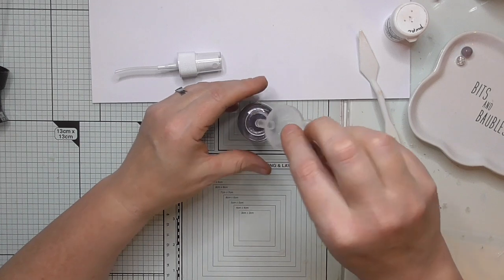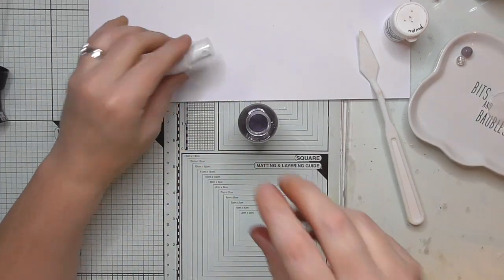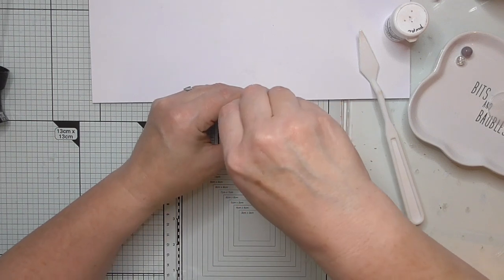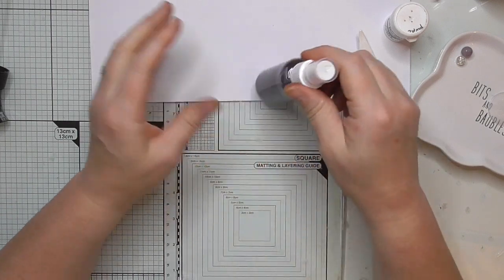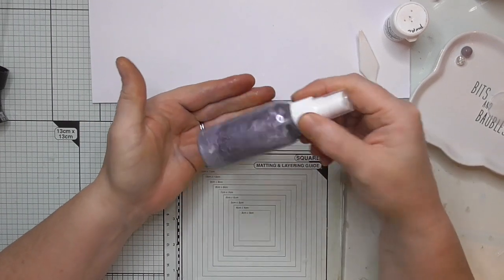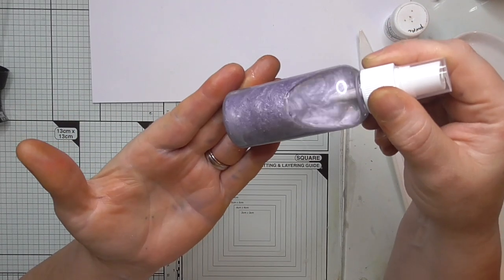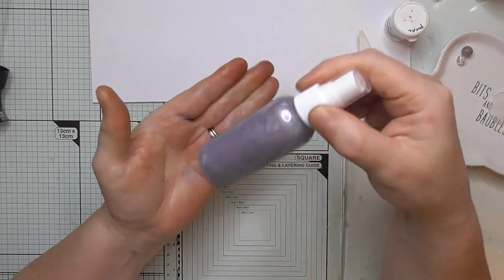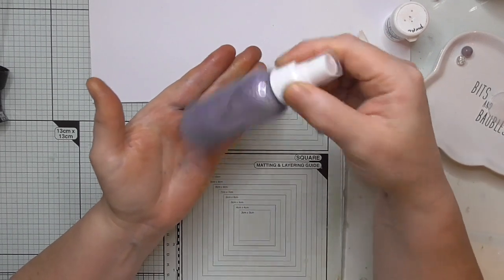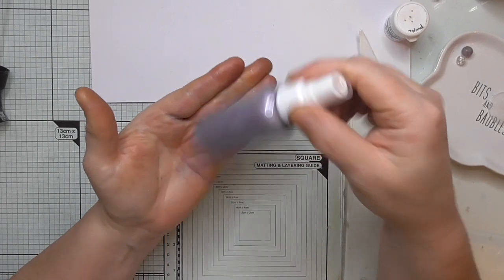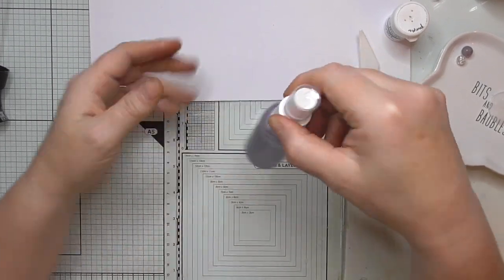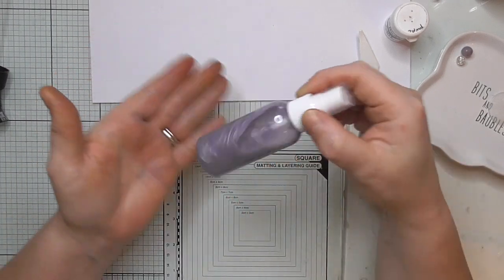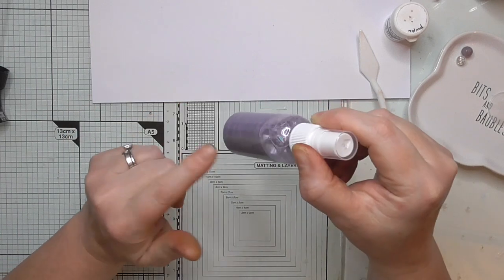Then put your lid on. My hand-eye coordination is shocking. I couldn't hit a bus with an elephant. Then tap tap tap, look at that, can you see? Look at that, yummy, pretty. That looks nice and pearly. It's just whether it's going to be a deep enough color for me.